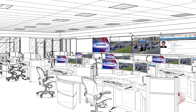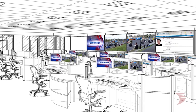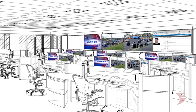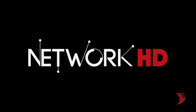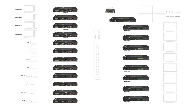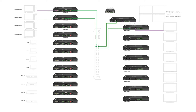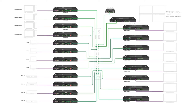WireStorm knows AV signal distribution inside and out. Network HD is WireStorm's AV over IP platform that allows any source device such as a PC, cable box, teleconference systems, or any other digital or analog video source to be connected to the system using a standard network switch and then distributed to any number of TVs, projection screens, or video walls.